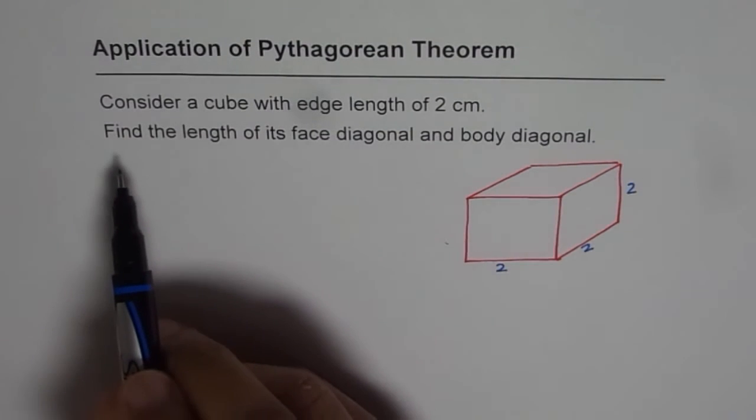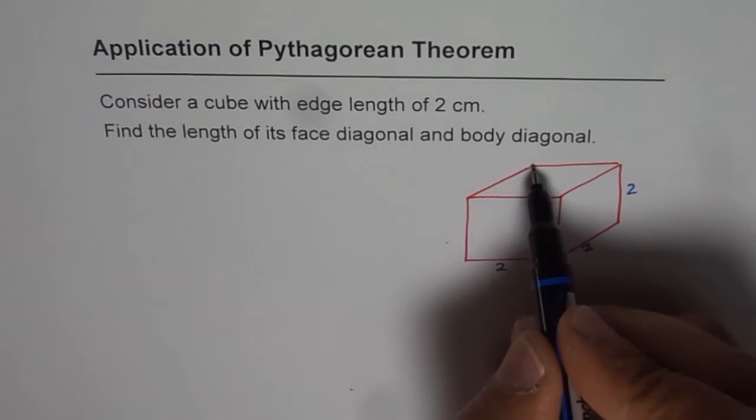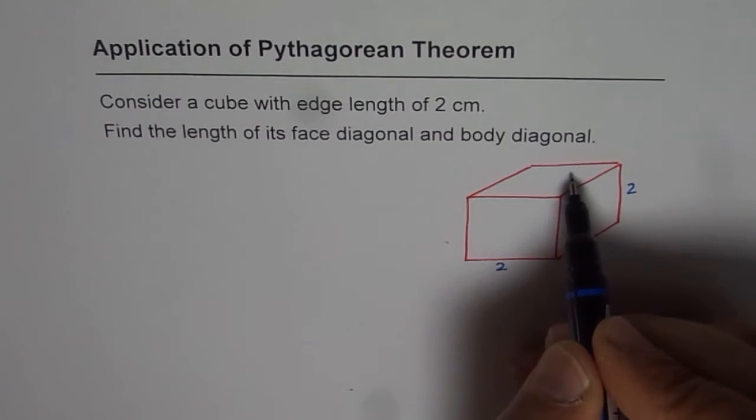Now when we say find the length of face diagonal, this is one face. You see these are 6 faces for the cube: 1, 2, 3.